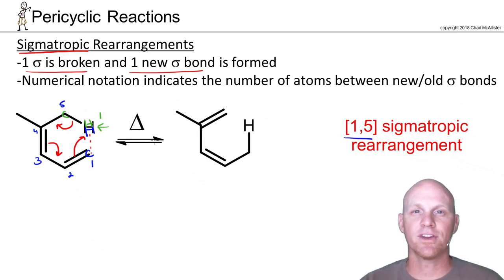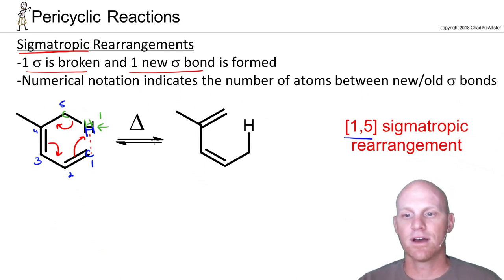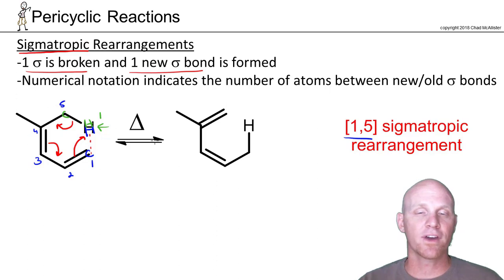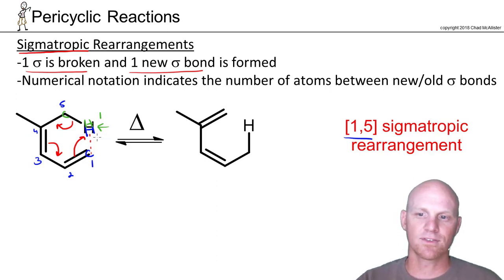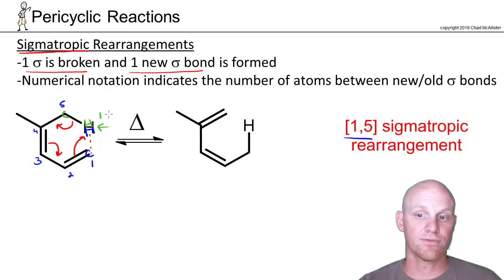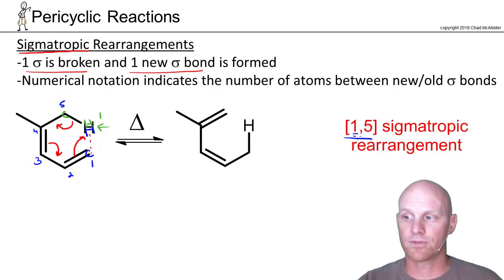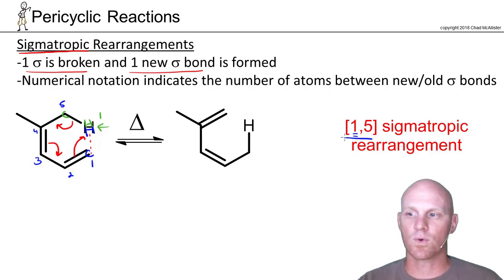You're counting the number of atoms on both sides of where you form and break the bond. It's a little funky on this one because the same atom is involved both in forming and breaking, and that's where the "one" comes from. It'll be a little easier to see where that numerical system comes from on the next example.